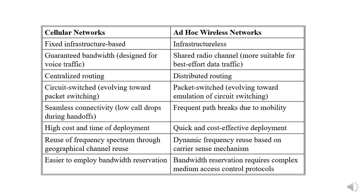The differences: Cellular networks are fixed infrastructure-based, while ad hoc is infrastructureless. Cellular networks have guaranteed bandwidth designed for voice traffic; ad hoc uses a shared radio channel. Cellular uses centralized routing; ad hoc uses distributed routing. Cellular is circuit-based; ad hoc offers seamless connectivity but suffers from frequent path breaks.